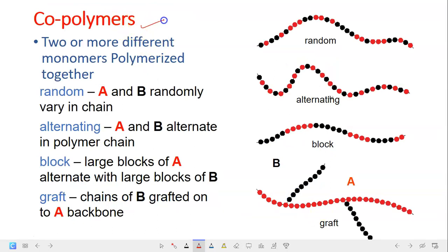Next is copolymers. So we have four different types of copolymers here. As I mentioned before, copolymers are actually two or more different monomers polymerized together, meaning a polymer that contains two or more different monomers. That is copolymer. If it's just the same monomer, it's a homopolymer. So the first one is random, in which the A and B, so this is monomer A and monomer B, they are randomly vary in chain. So this is random.